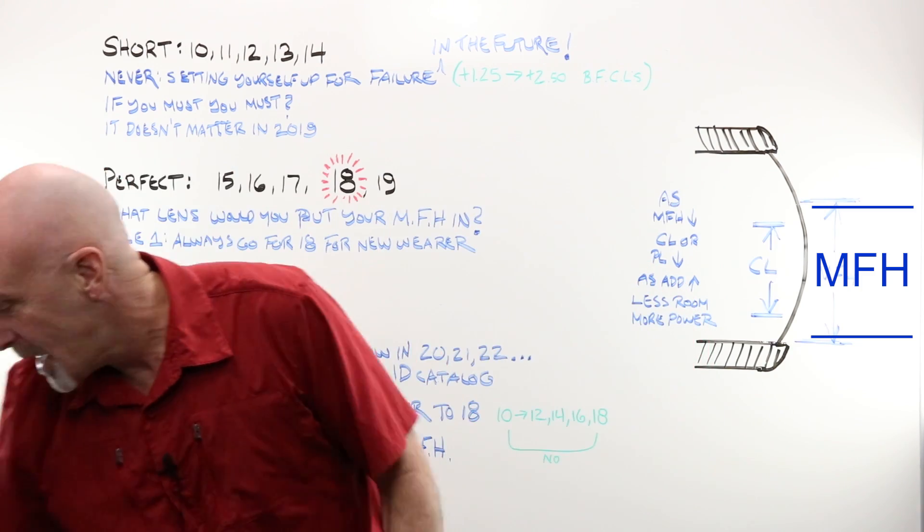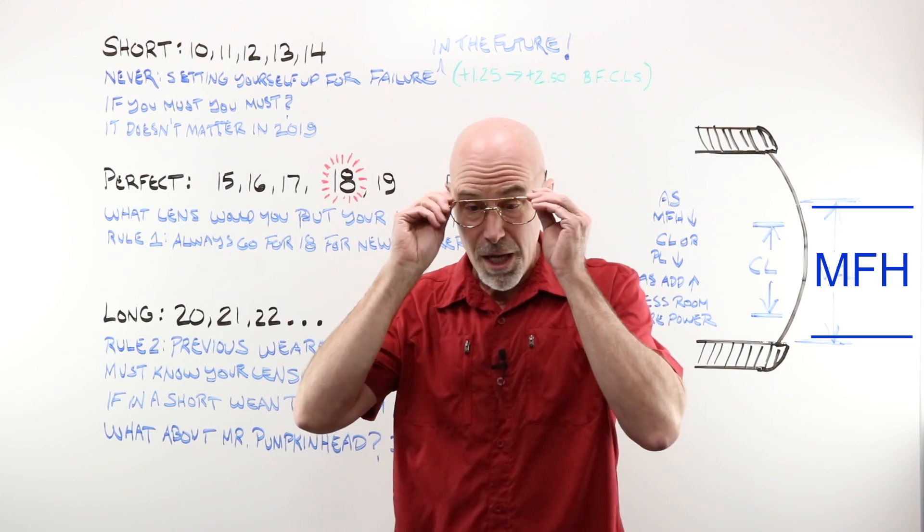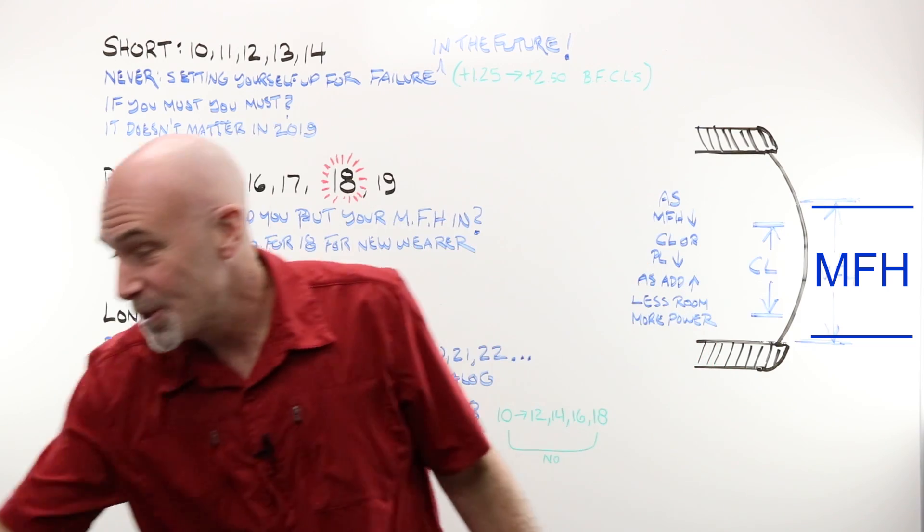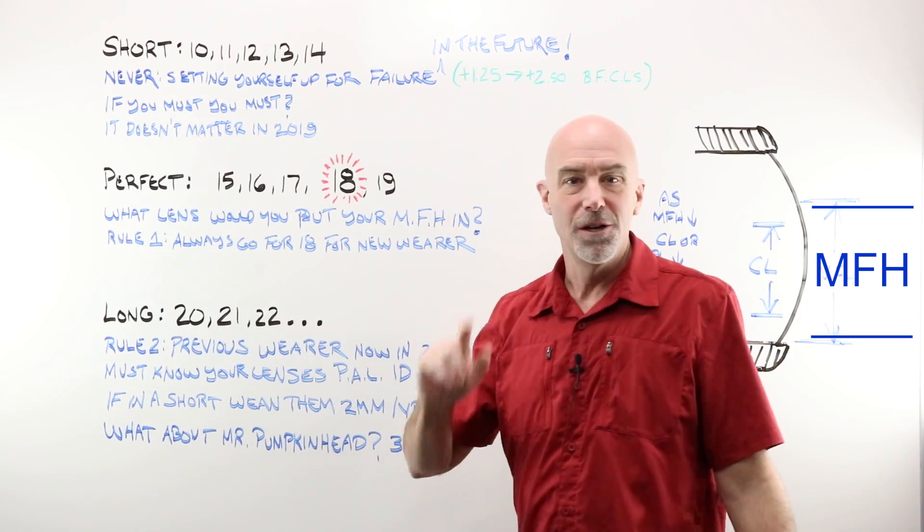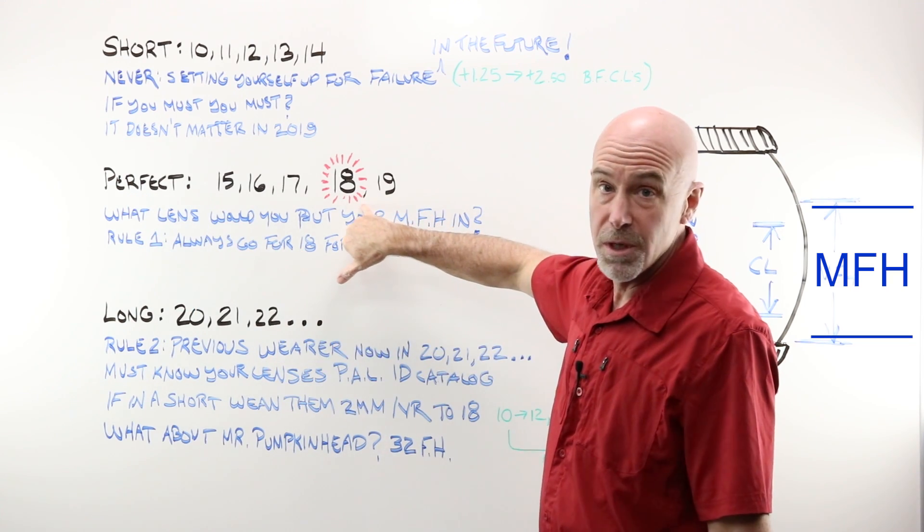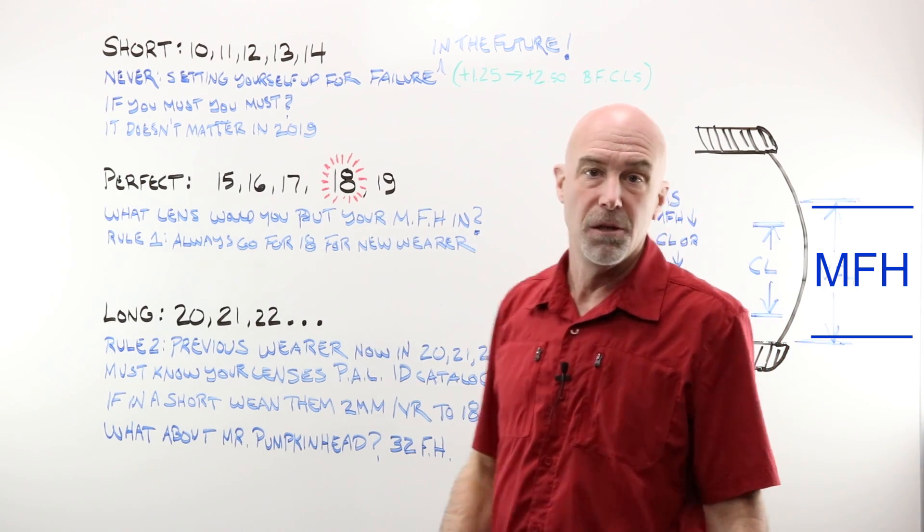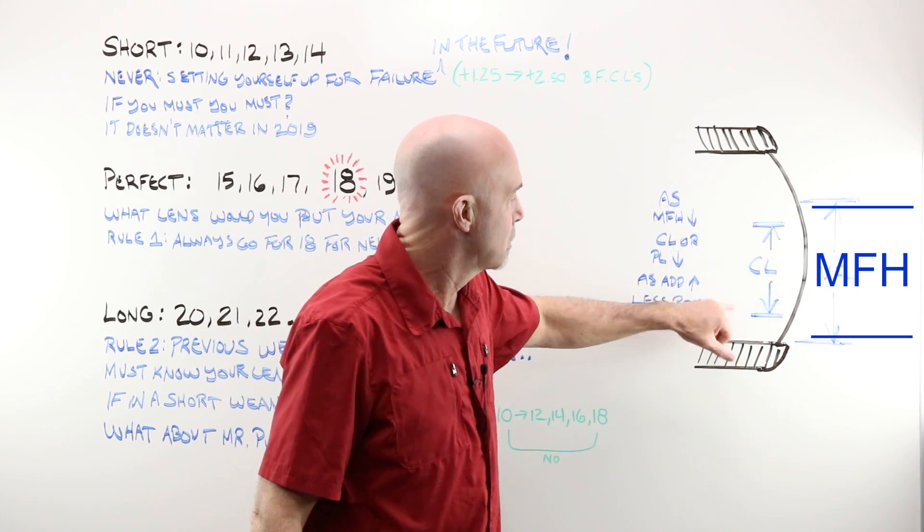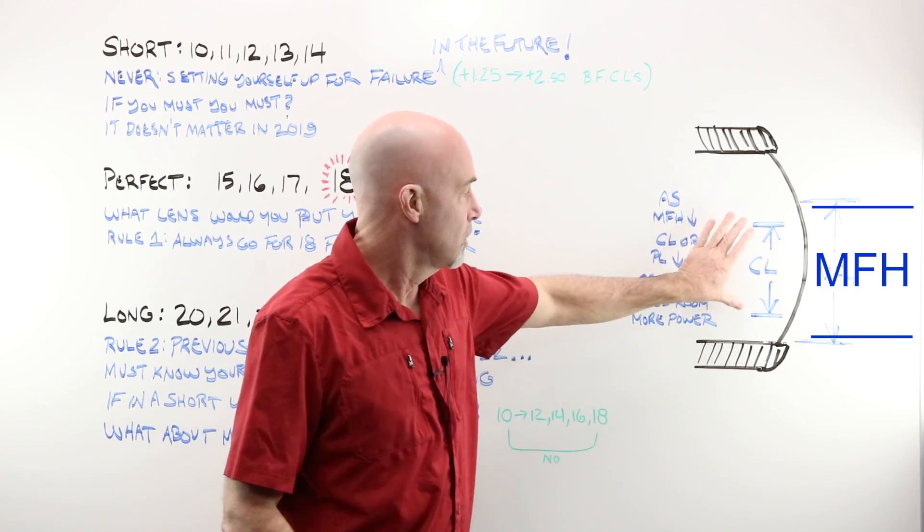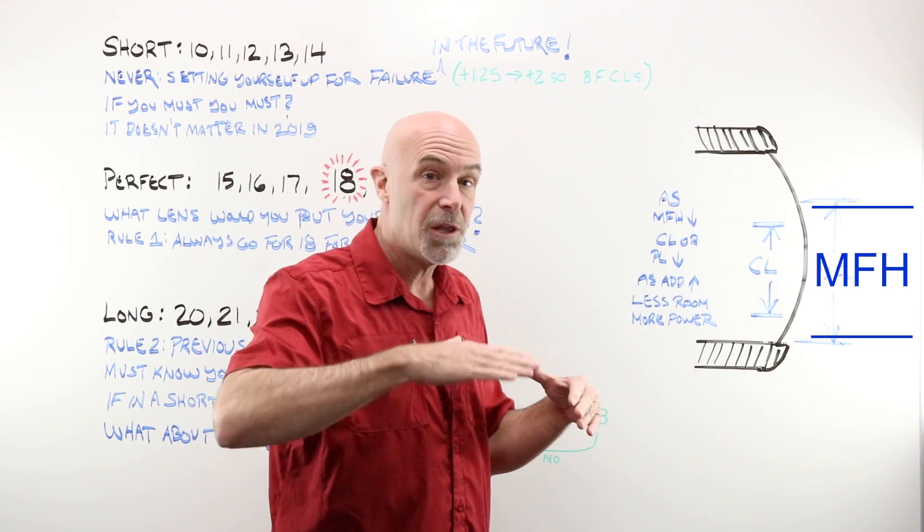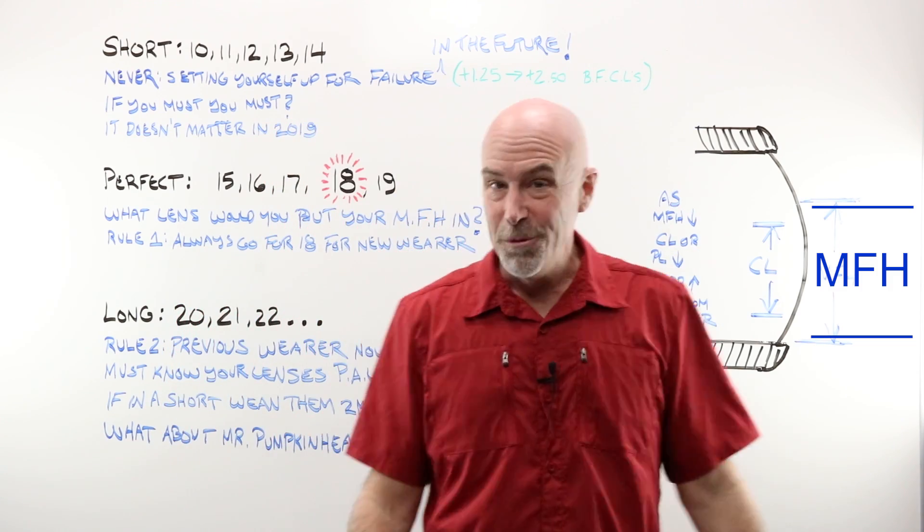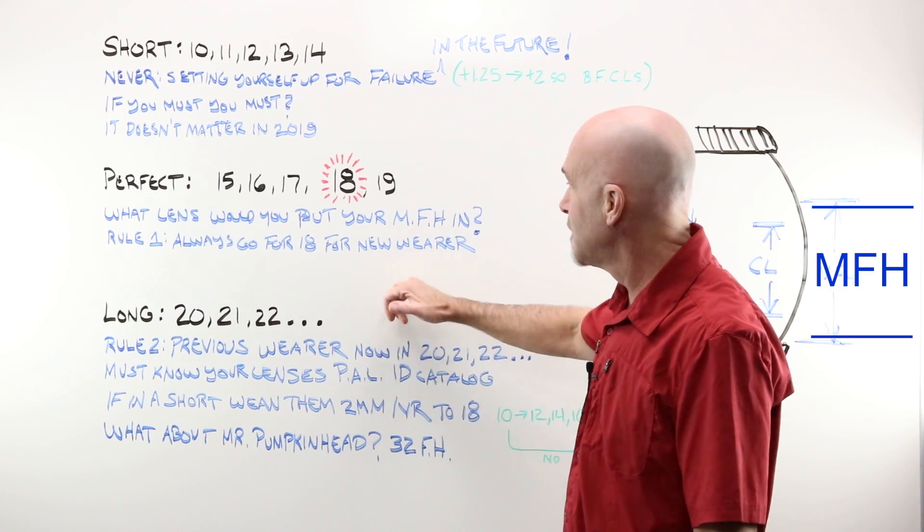Now, what about Mr. Pumpkinhead? He comes in and he has a frame with a minimum fitting height of a 32. And you would think, oh, I want the lens with the longest minimum fitting height. No, no. Perfect. Even though you have all that room, use a lens with a minimum fitting height of 18. Again, why? Because spreading your intermediate zone over 14 millimeters is very comfortable. It's a good amount of room to spread things out for smooth transition, good head movement, comfortable lens. Do it. Your life is going to be so much easier.